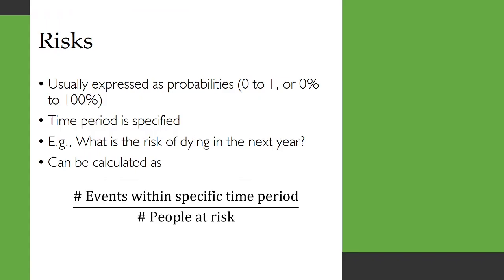Let's start off with risks. Risks are usually expressed as probabilities, from 0 to 1 or from 0% to 100%. What's key with a risk is that a time period is specified and built into it. For example, what is the risk of dying in the next year? It can be calculated as the number of events within a specific time period divided by the people at risk.